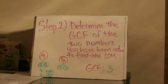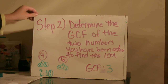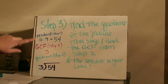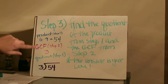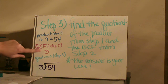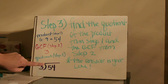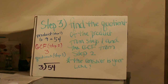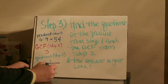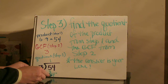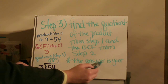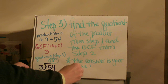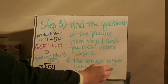So now I have two numbers: a product of 54 and a GCF of 3. Step three is to find the quotient of the product from step one and the GCF from step two. My product from step one was 54, and my GCF from step two was 3. You're going to divide the product by the GCF — so I'm going to divide 54 by 3. 3 goes into 5 once, with 2 left over; bring down the 4, and 3 goes into 24 eight times. The number you find here is your LCM — the LCM of 6 and 9 is 18.